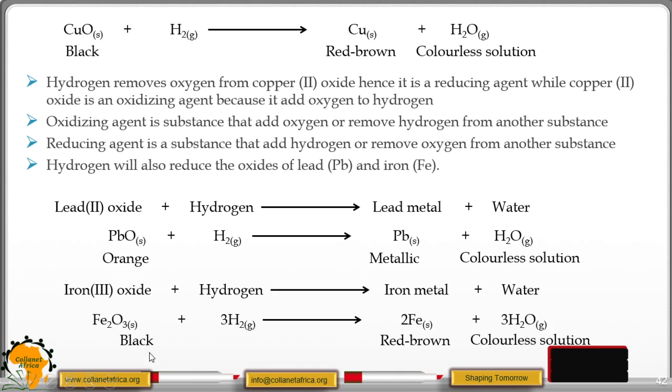Iron oxide is black. So it's going to change to red brown, which is the color of the iron metal. And this is the equation for that reaction.